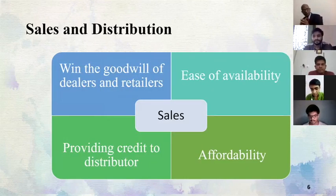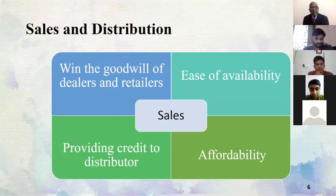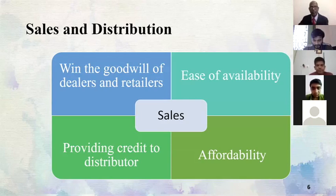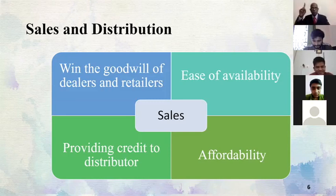Coming to sales and distribution, we first maintain a good relationship with dealers and retailers, because they are the first touchpoint before reaching the final direct customer. We also take into account affordability and availability. Affordability determines whether the customer will purchase a product, and even with high sales interest we must ensure ease of availability. We also give dealers and retailers credit and incentives so that they can promote our products, since dealers and retailers have a big say in what product the consumer ultimately takes.